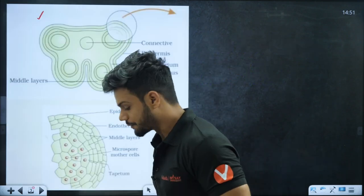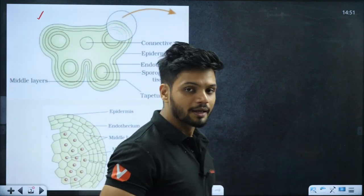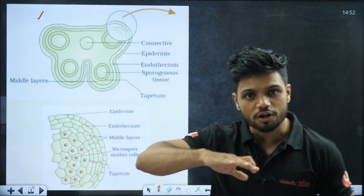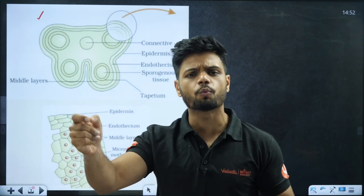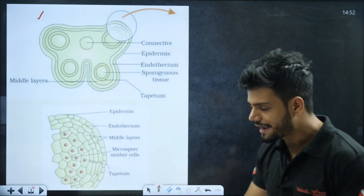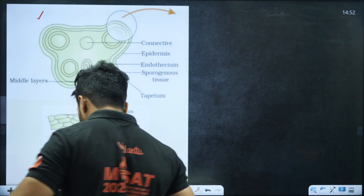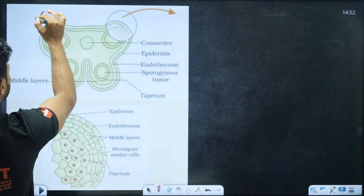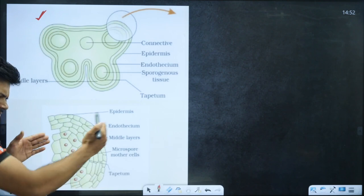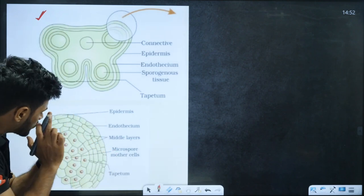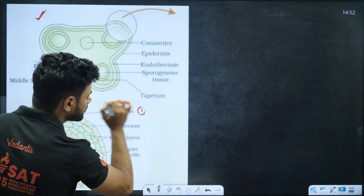The first diagram is from the chapter sexual reproduction in flowering plants - the structure of microspore angia or the structure of anther walls. This diagram is easy to draw but labeling requires careful attention. The diagram is super easy, it's the first important diagram.